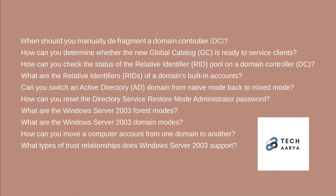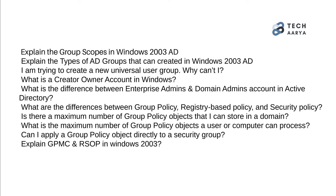39. How can you move a computer account from one domain to another? 40. What types of trust relationships does Windows Server 2003 support? 41. Explain the group scopes in Windows 2003 AD. 42. Explain the types of AD groups that can be created in Windows 2003 AD. 43. I am trying to create a new universal user group — why can't I? 44. What is a Creator-Owner account in Windows?